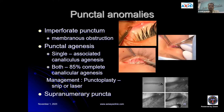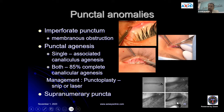Punctal anomalies include imperforate punctum — usually a membranous obstruction bypassable with a simple needle-tip punctum dilator — and punctal agenesis. If single, it is associated with canalicular agenesis; if bilateral, there is a very high chance of canalicular agenesis also. In these cases, we can do a punctoplasty — a 3-snip or laser punctoplasty. If successful and canaliculi are patent, we can use a mini monocanalicular stent to keep the passage open.